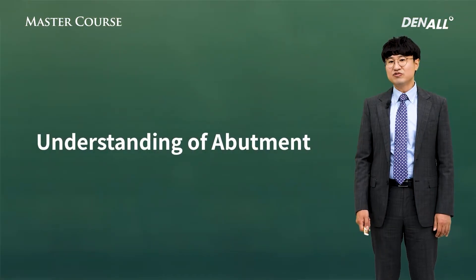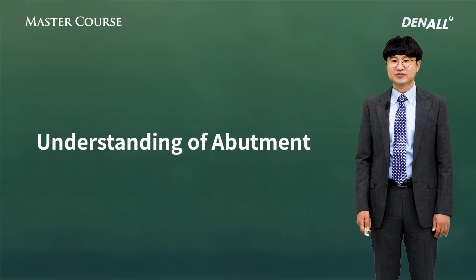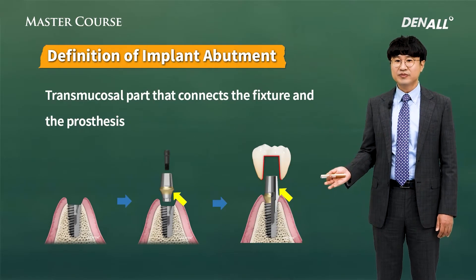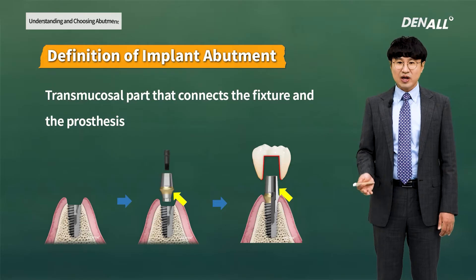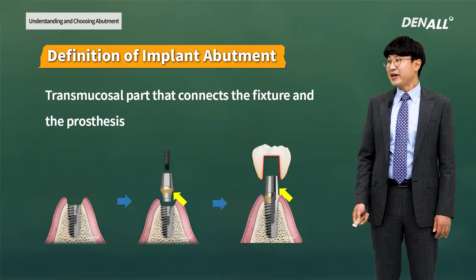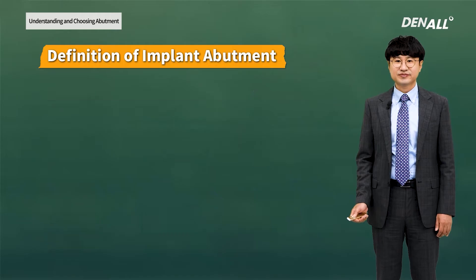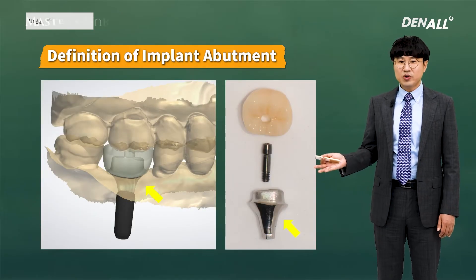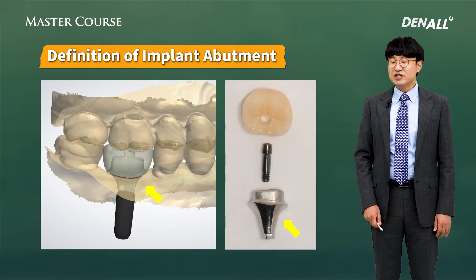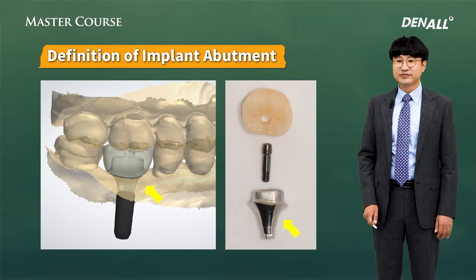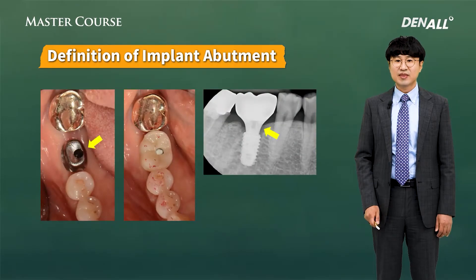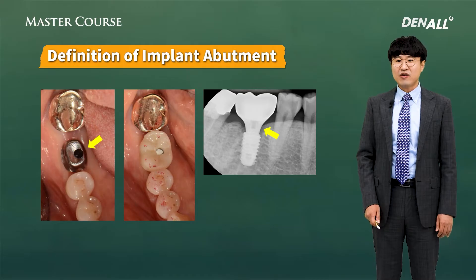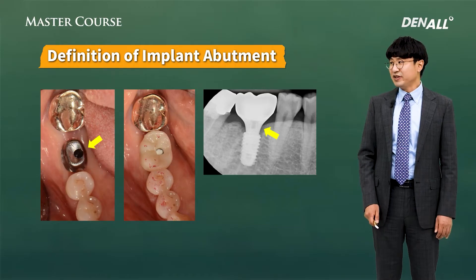First, what is an abutment? As you can see, the abutment is a transmucosal part that connects the fixture and the prosthesis. Here, they are indicated with the arrows. Usually, they are connected to the fixture with a screw and connected to the crown via cementing.